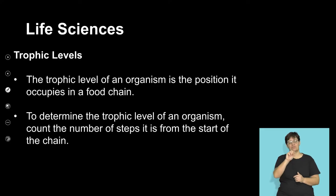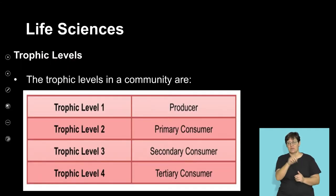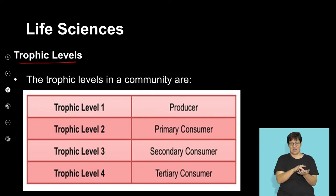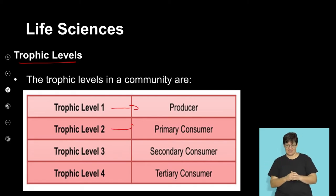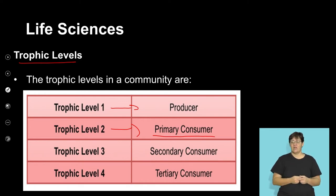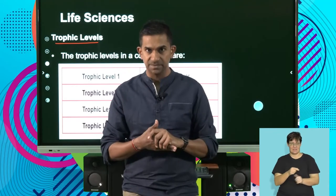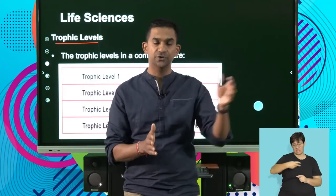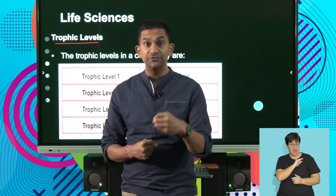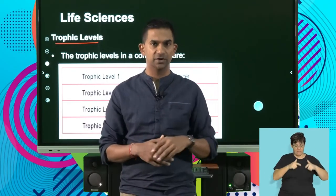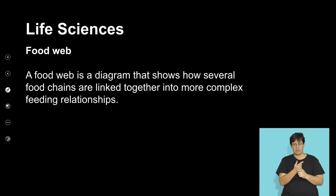The trophic level essentially points to the position an individual organism has in the ecosystem. The first trophic level refers to producers, the second to primary consumers, the third to secondary consumers, and the fourth to tertiary consumers. In a food chain, the more diverse an ecosystem, the more complex the food chain becomes. Because energy flows, there must be a complex organization of trophic levels, which is important as we get into understanding food webs.